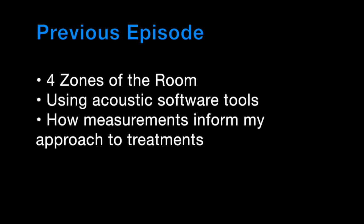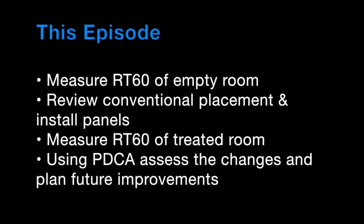In episode two, I covered the four zones of the control room. I walked through using acoustic measurement tools, REW and AMROC, and I also detailed how the data I capture with these tools will inform my approaches to treating the room. So in this episode, I'll measure the RT-60 of the empty studio, review conventional placement of absorption and install those panels, and then I'll measure the room again. Using Plan, Do, Check and Adjust, I'll assess the acoustic changes and look for new ways to further improve the room.